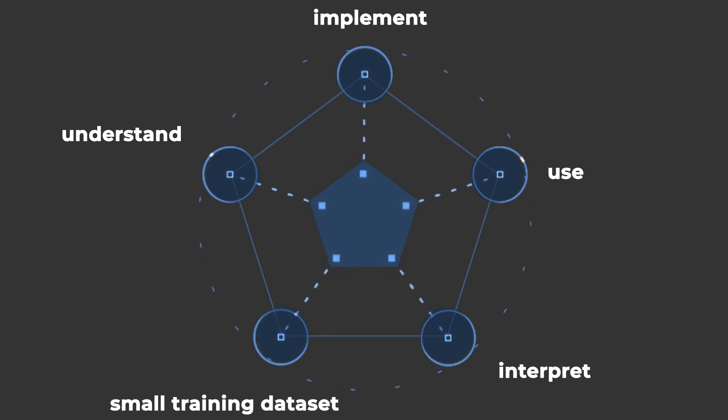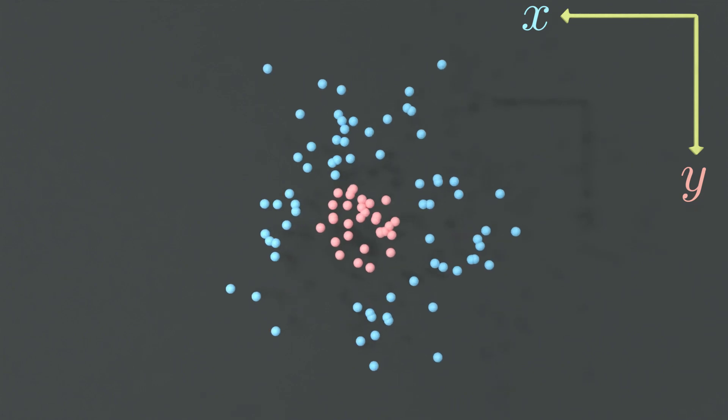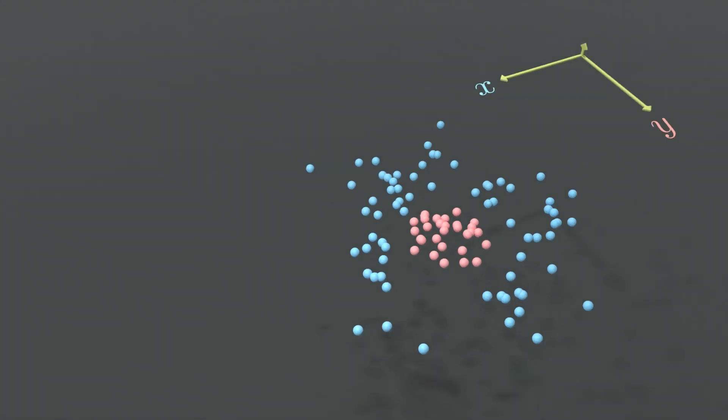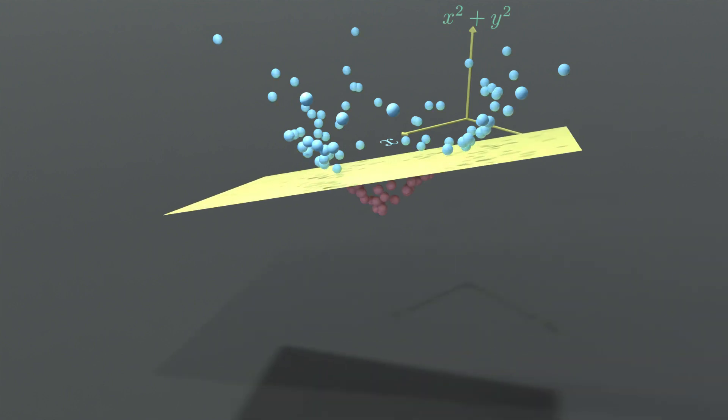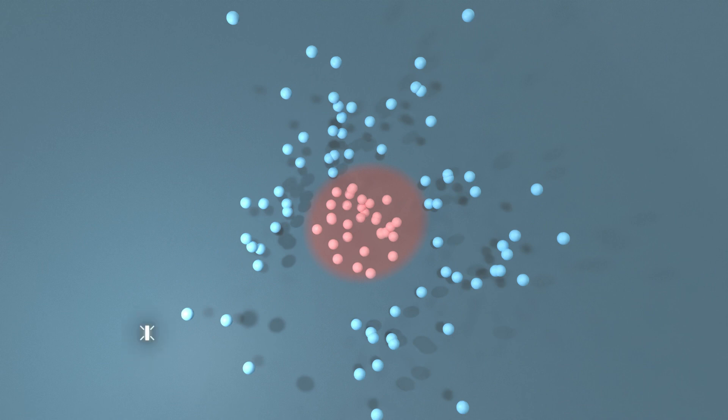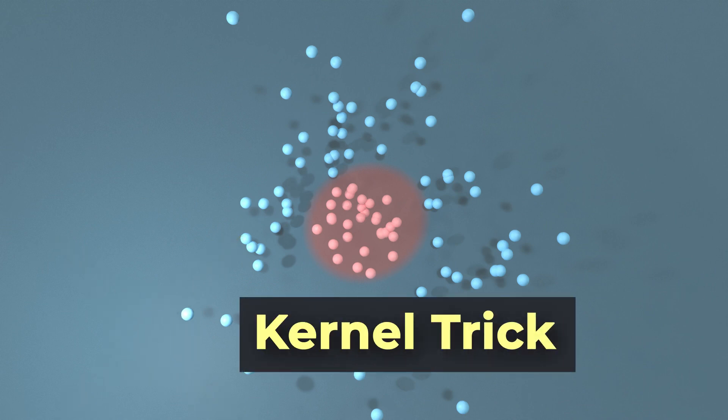The simplicity of SVMs can also be a problem. In many applications, the points cannot be separated by a hyperplane. A common workaround in this case is to: (a) augment the data with some non-linear features that are computed from the existing ones, (b) find the separating hyperplane in this higher dimensional space, and (c) project back to the original space. A clever technique known as the kernel trick allows us to perform all of these steps in a very efficient manner.